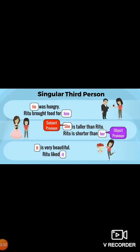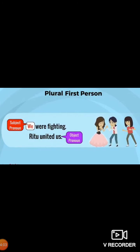Now see singular third person. He was hungry — Ritu brought food for him. 'He' is subject and 'him' is object pronoun. She is taller than Ritu — Ritu is shorter than her. 'She' is subject pronoun and 'her' is object pronoun. It is very beautiful here — 'it' is subject pronoun. Ritu liked it — here 'it' has come after the verb, so it is object pronoun.